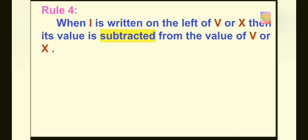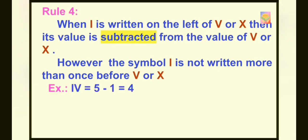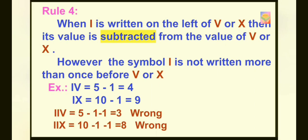Now let's move to the last rule. When I is written on the left of V or X, its value is subtracted from the value of V or X. However, I is not written more than once before V or X. For example, IV equals 5 minus 1 equals 4. Similarly, IX equals 10 minus 1 equals 9. Writing I two times before V would be wrong.